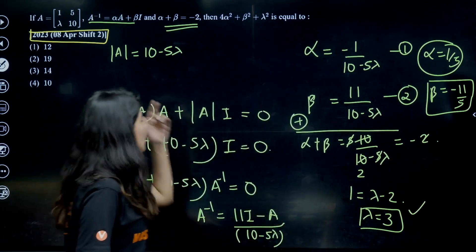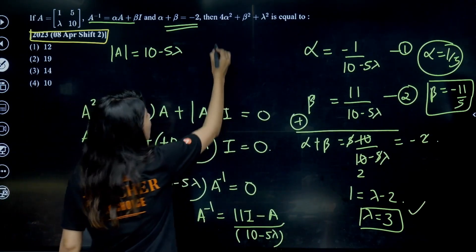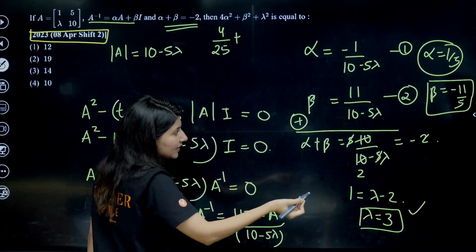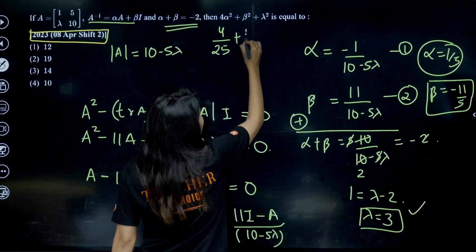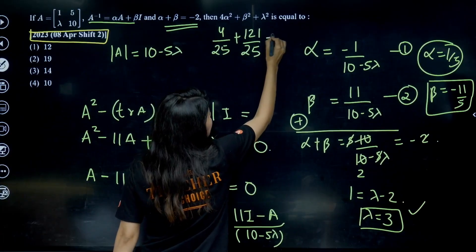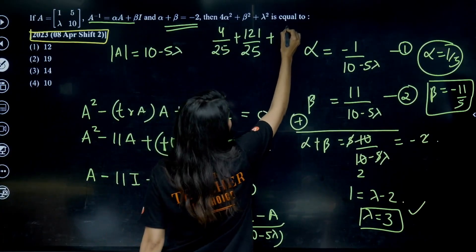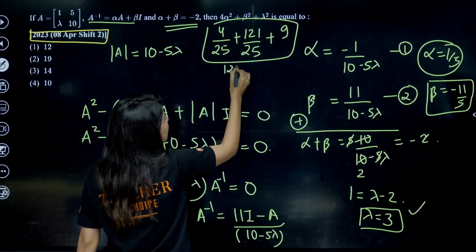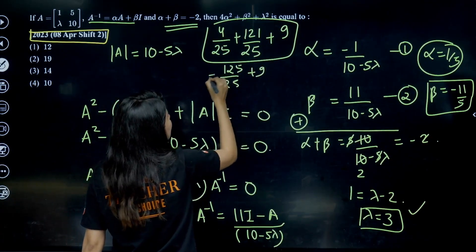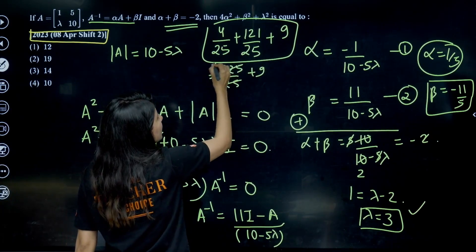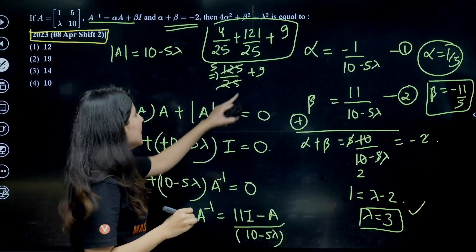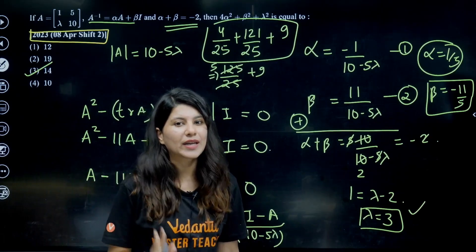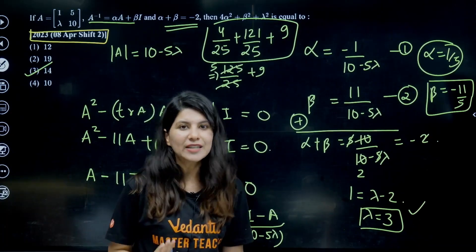Now plug in the values. They ask for 4α² + β² + λ². That is 4/25 + 121/25 + 9 = 125/25 + 9 = 5 + 9 = 14. The answer is Option 3: 14.